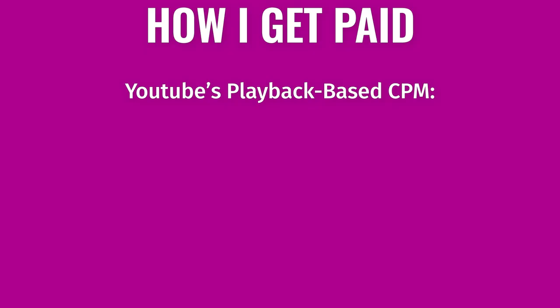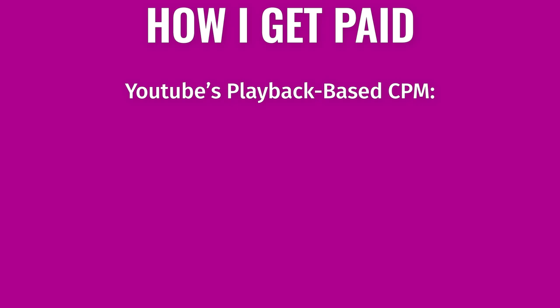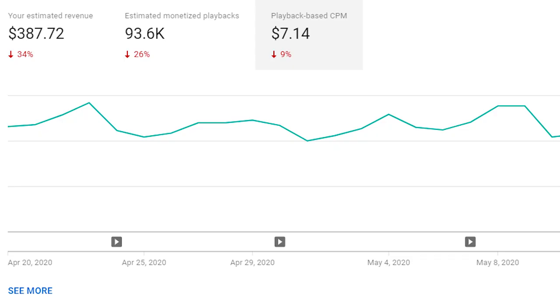You didn't expect that ad to come up, did you? But this is my point. That ad you just watched or skipped — YouTube gets paid 55% of that, and I get paid 45%. What I get paid is determined by YouTube's playback-based CPM — effective cost per mile — or the estimated average gross revenue per thousand playbacks on which an ad was shown, independent of which specific playbacks the advertiser was charged for. Currently on my channel, my CPM is $7.18.